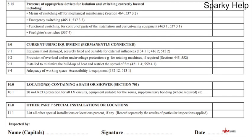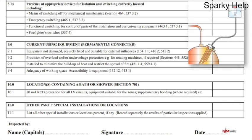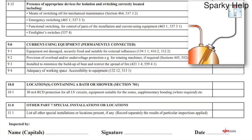Presence of appropriate devices for isolation and switching, correctly located. Means of switching off for mechanical maintenance sounds quite commercial and industrial, but it's simply about — can you actually switch things off? An immersion heater, for instance — can you put an isolator next to it? Cookers — have you put an isolator switch so you can turn it off, and is it within the correct distance? So that non-skilled people, if they need to clean them, can safely isolate it.